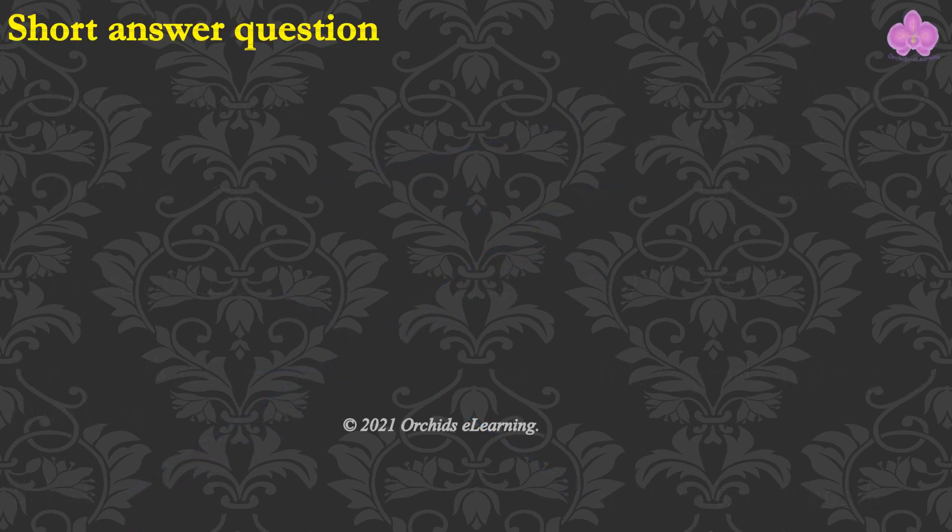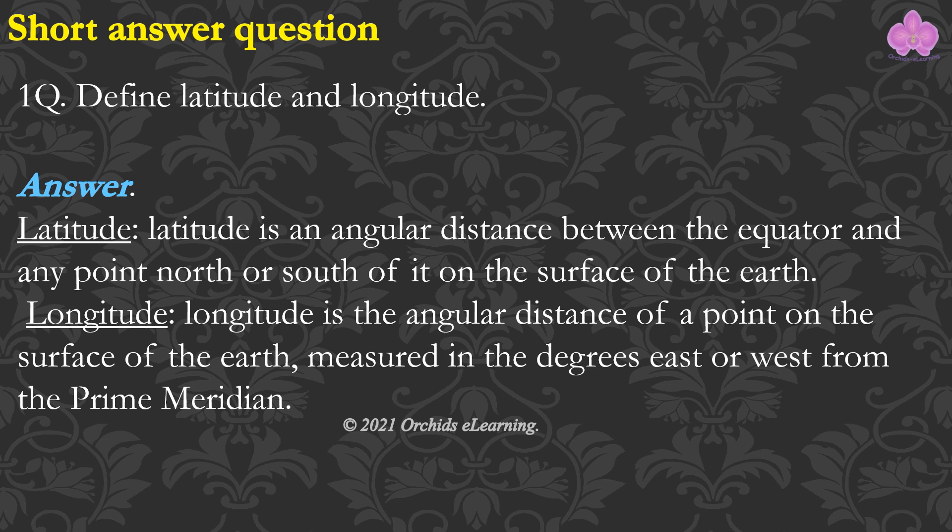Short answer question. Define latitude and longitude. Latitude is an angular distance between the equator and any point north or south of it on the surface of the Earth. Longitude is the angular distance of a point on the surface of the Earth, measured in degrees east or west from the prime meridian.